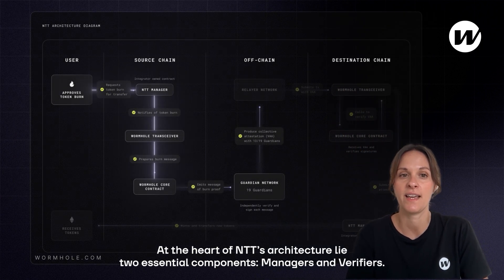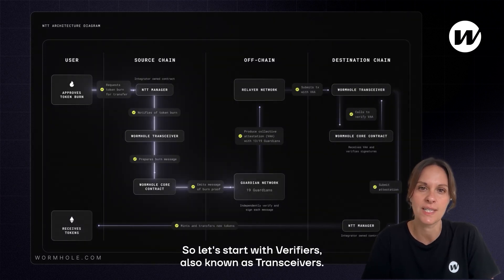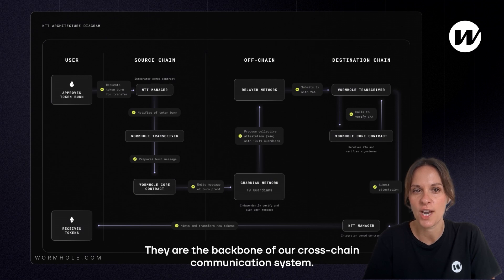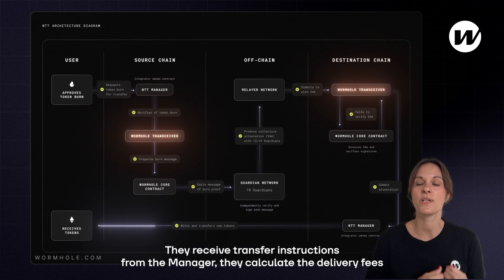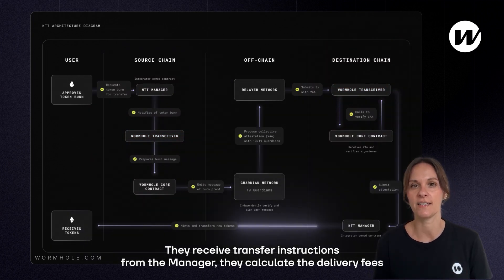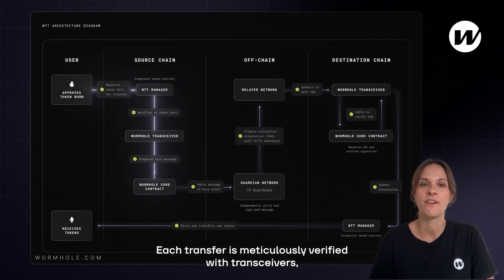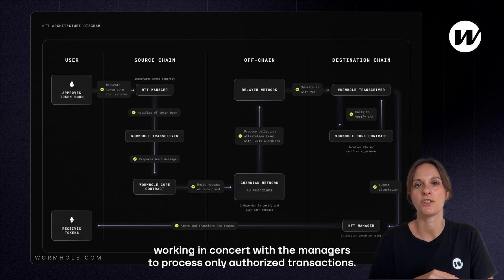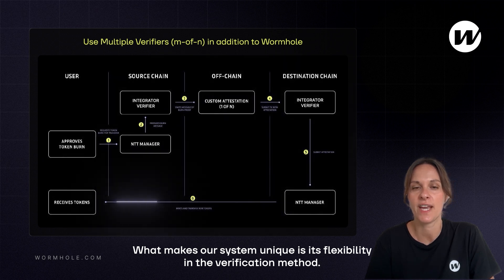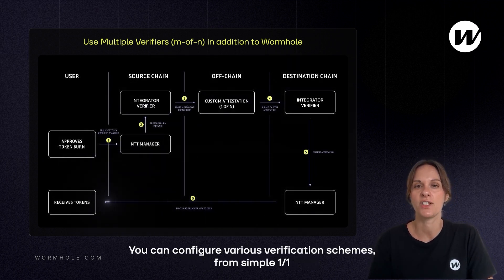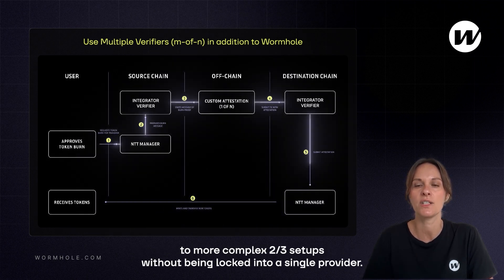At the heart of NTT's architecture lie two essential components: managers and verifiers. Let's start with verifiers, also known as transceivers. They are the backbone of our cross-chain communication system. Verifiers operate through a sophisticated process: they receive transfer instructions from the manager, they calculate the delivery fees, and they ensure secure message relaying between chains. Each transfer is meticulously verified with transceivers working in concert with the manager to process only authorized transactions. What makes our system unique is its flexibility in verification methods — you can configure various verification schemes from simple one-to-one to more complex 2-of-3 setups without being locked into a single provider.